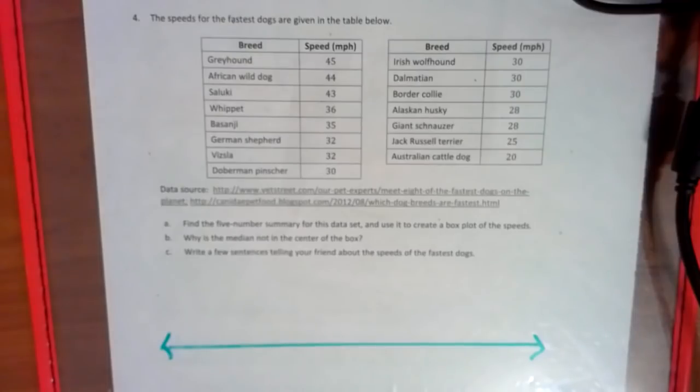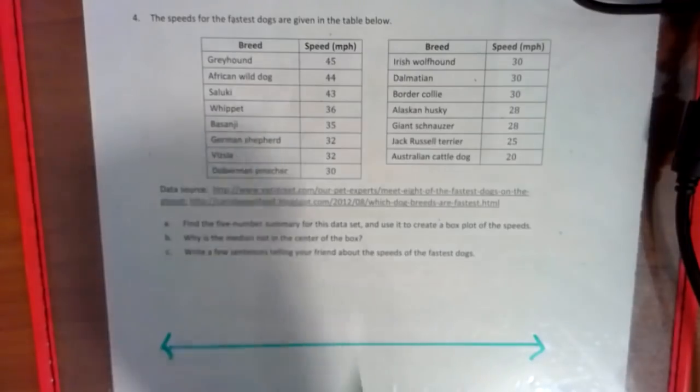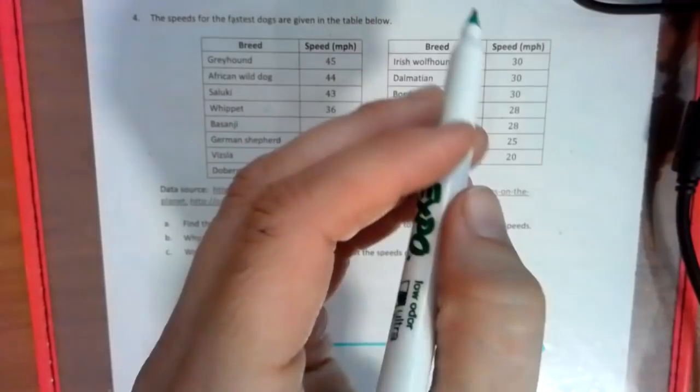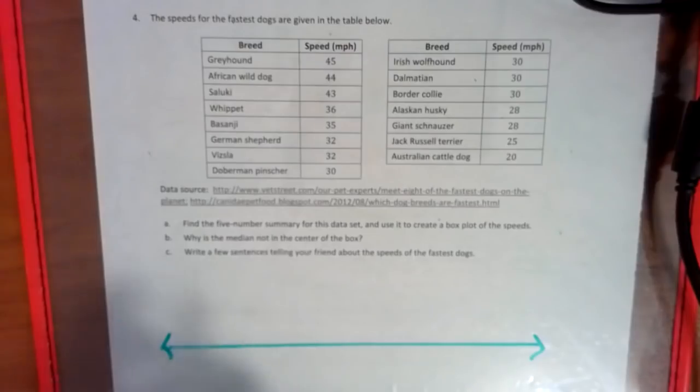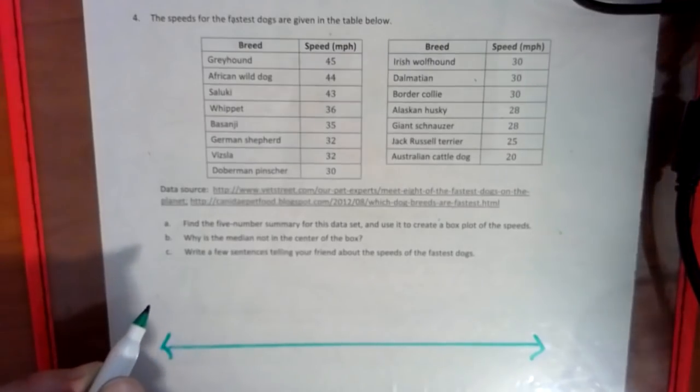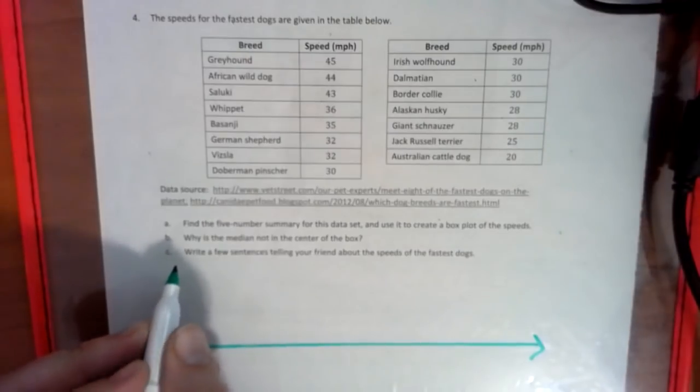The first thing we're going to do, first thing we always got to do, is take these dog speeds and put them all in order from least to greatest. So I'm just going to do that naturally and you could just follow along and write as I do it.